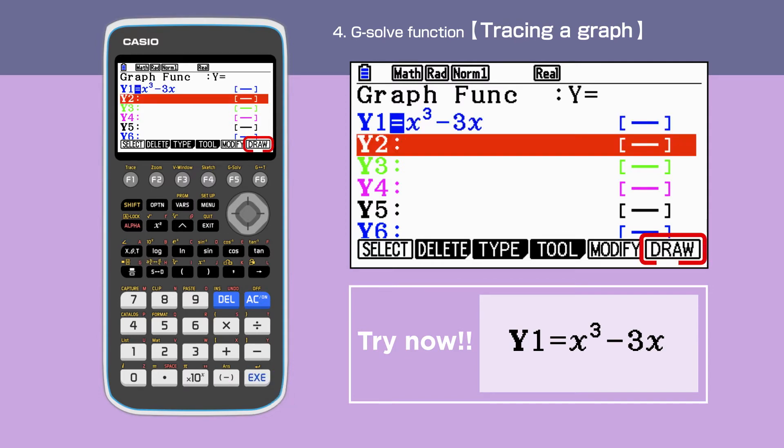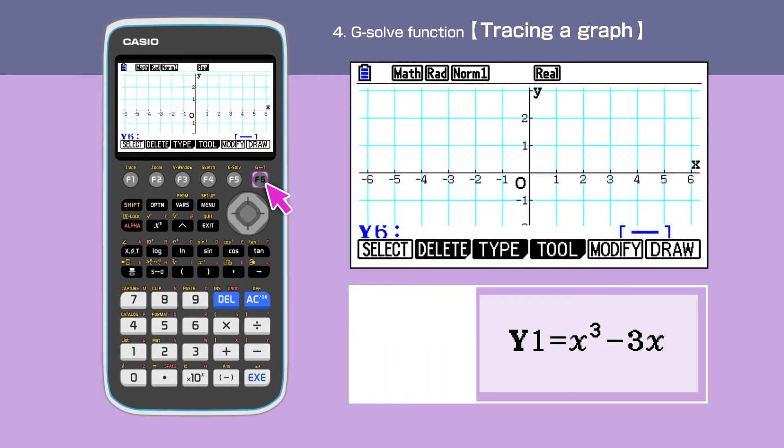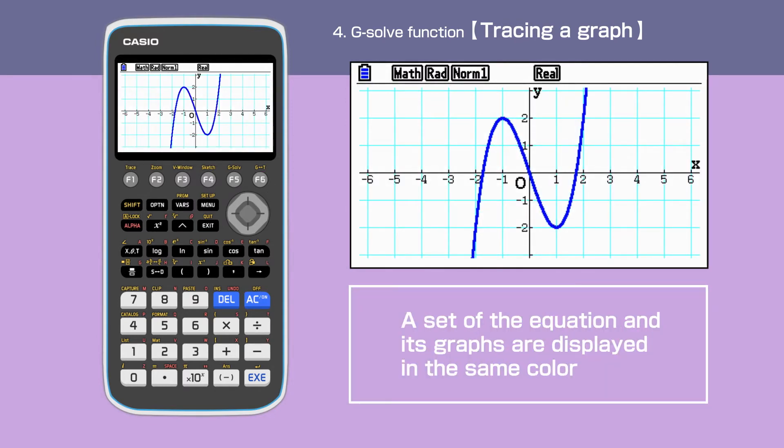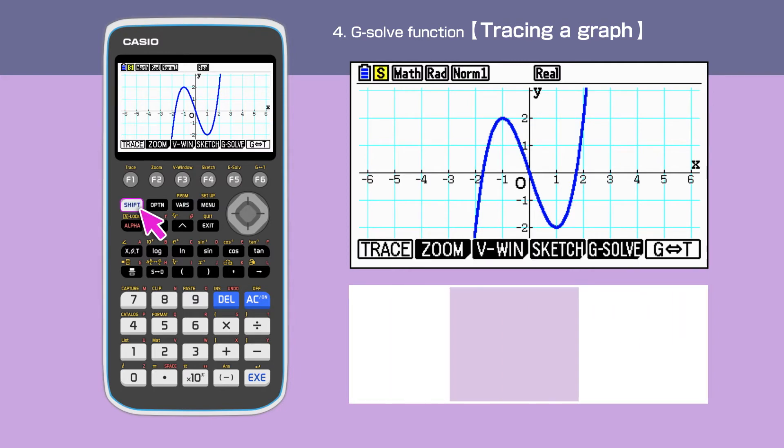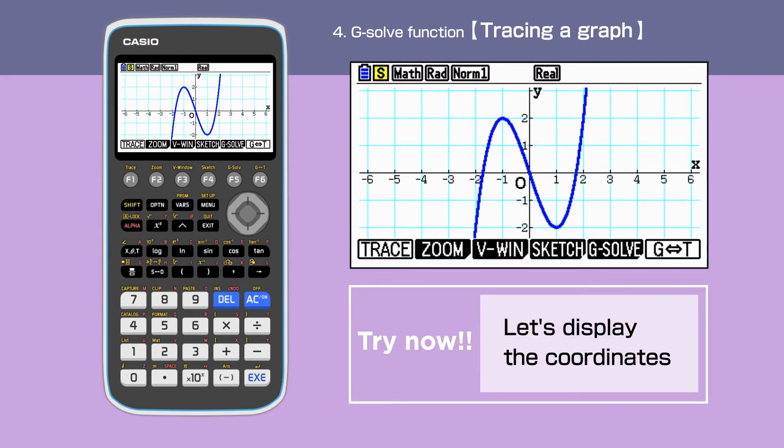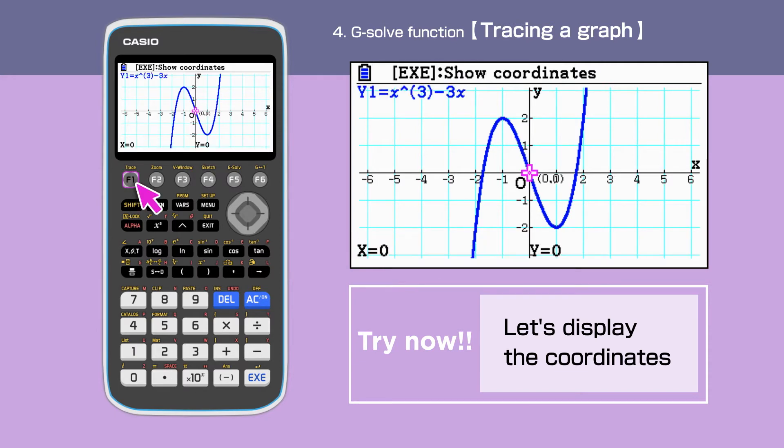Press F6 to draw the graph. The graph is drawn. Press SHIFT to open the command menu, then press F1 to select trace function. The cursor is displayed in pink, and the coordinates are shown at the bottom of the screen.